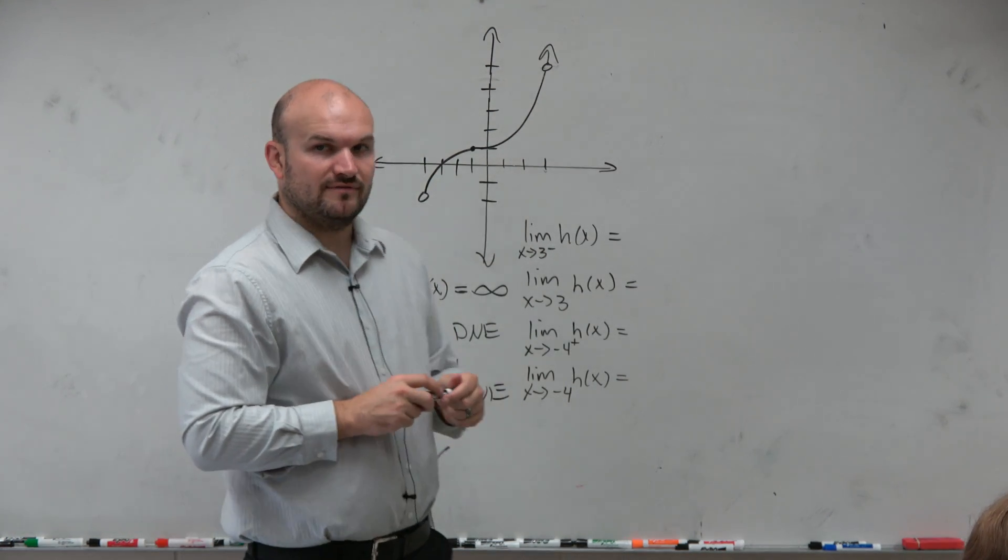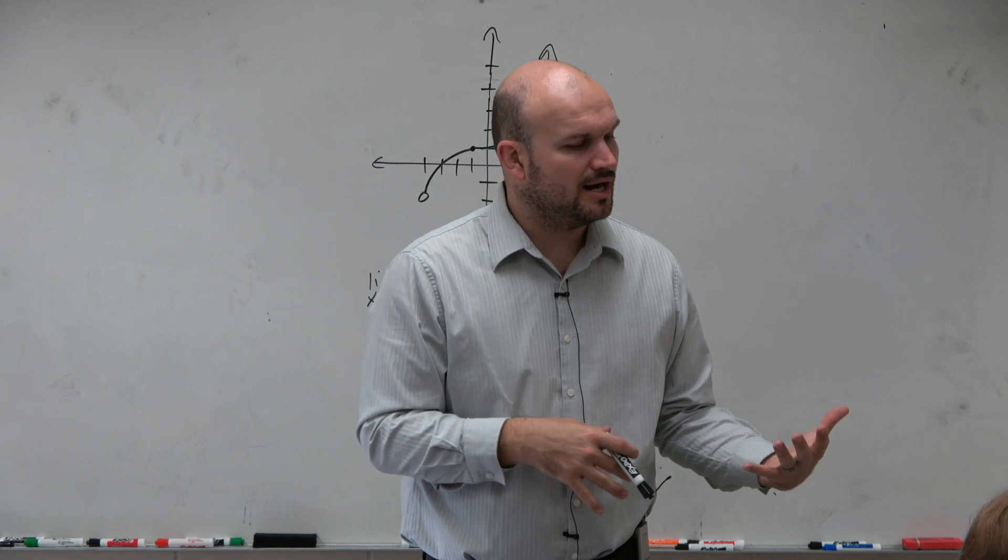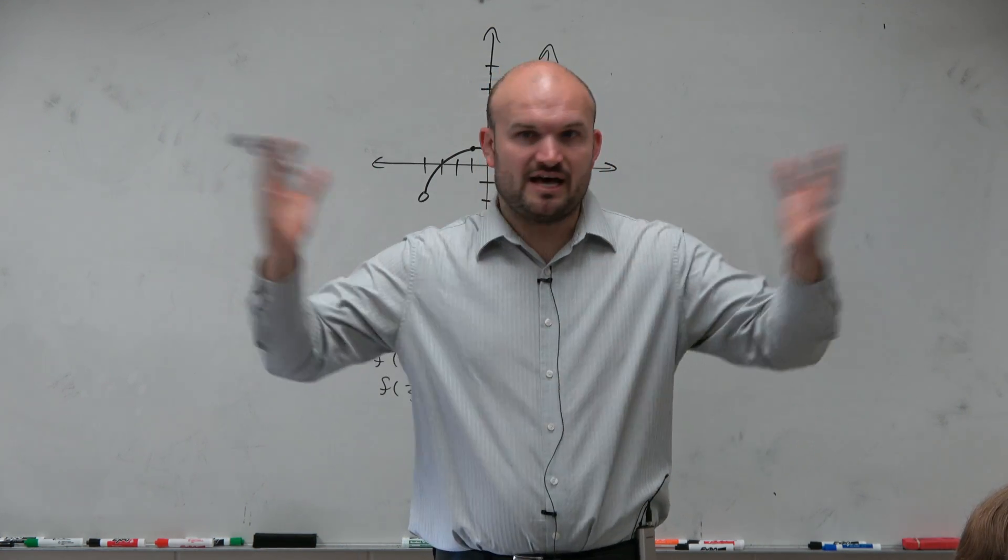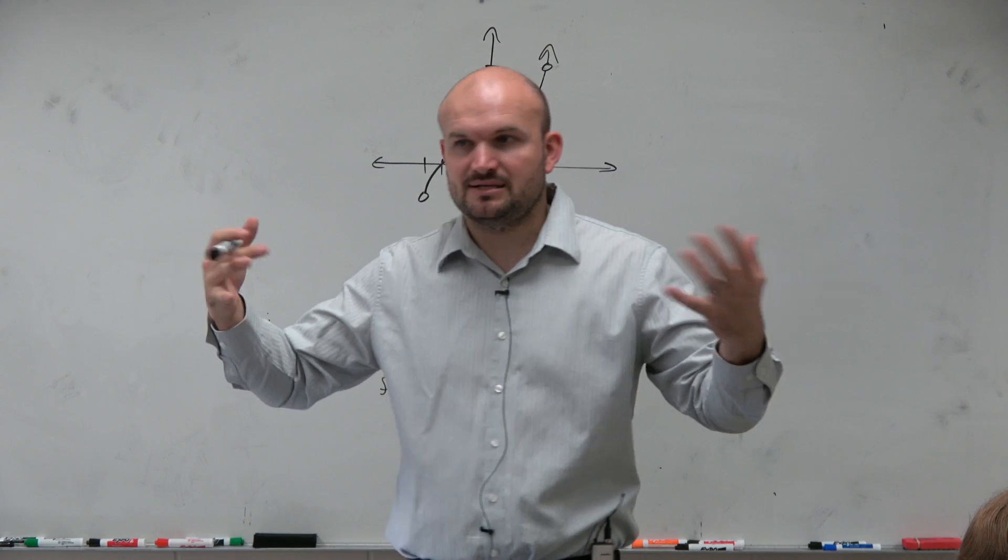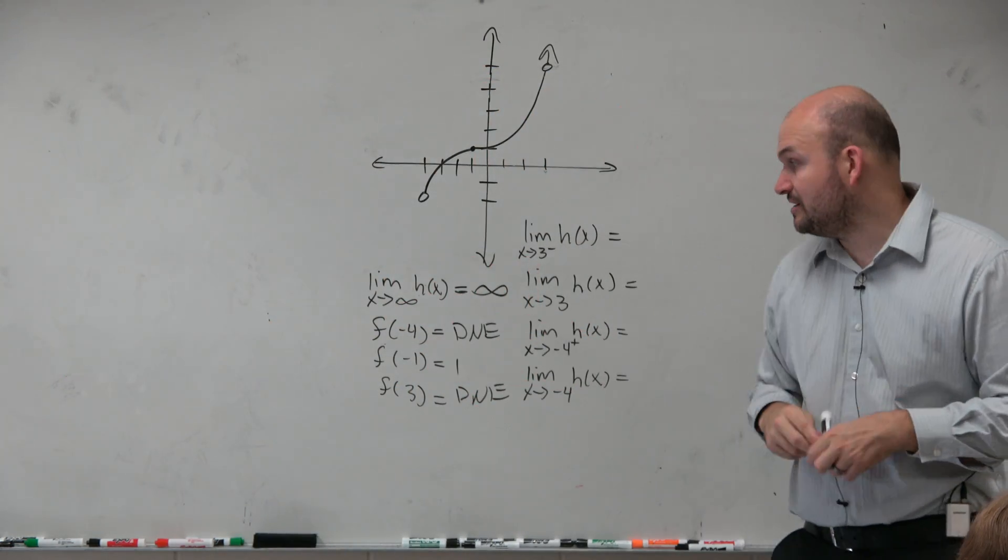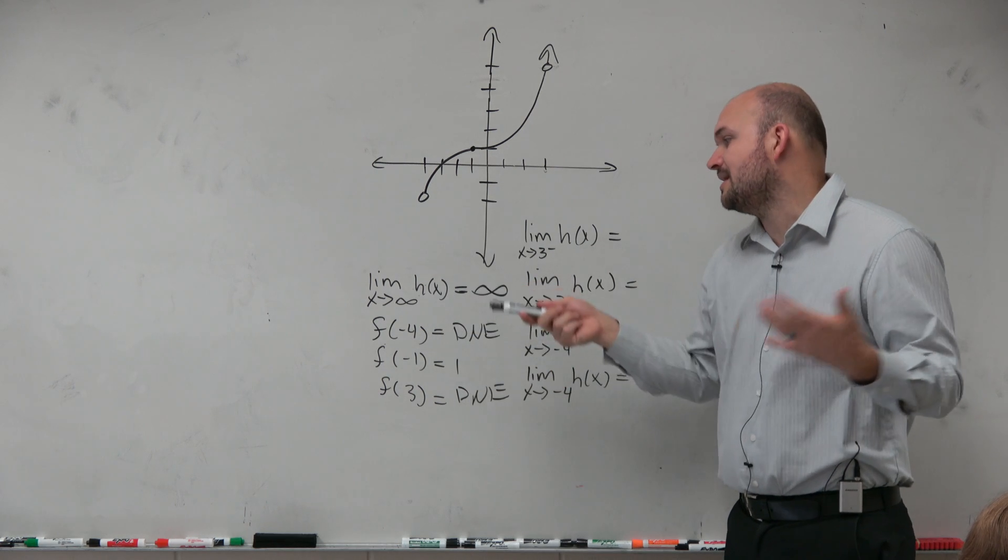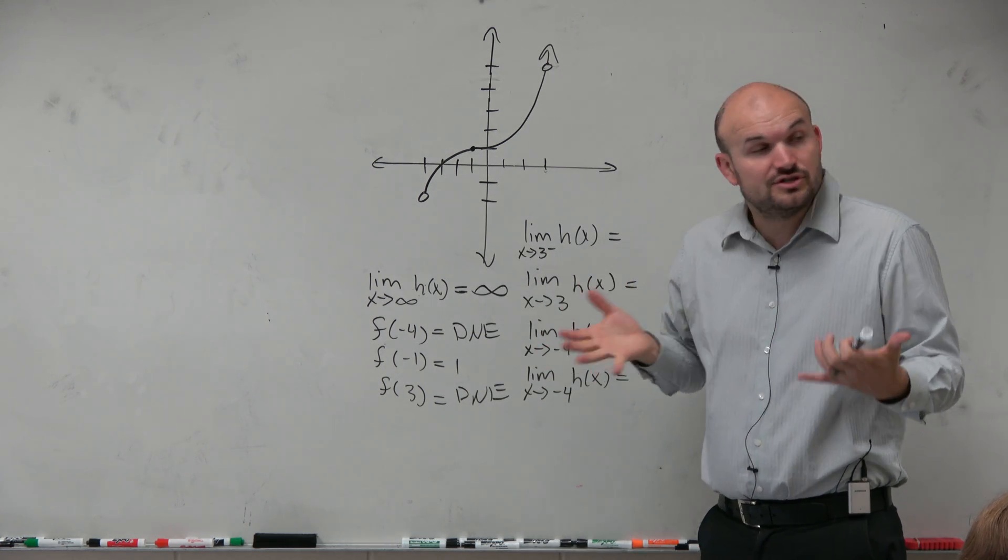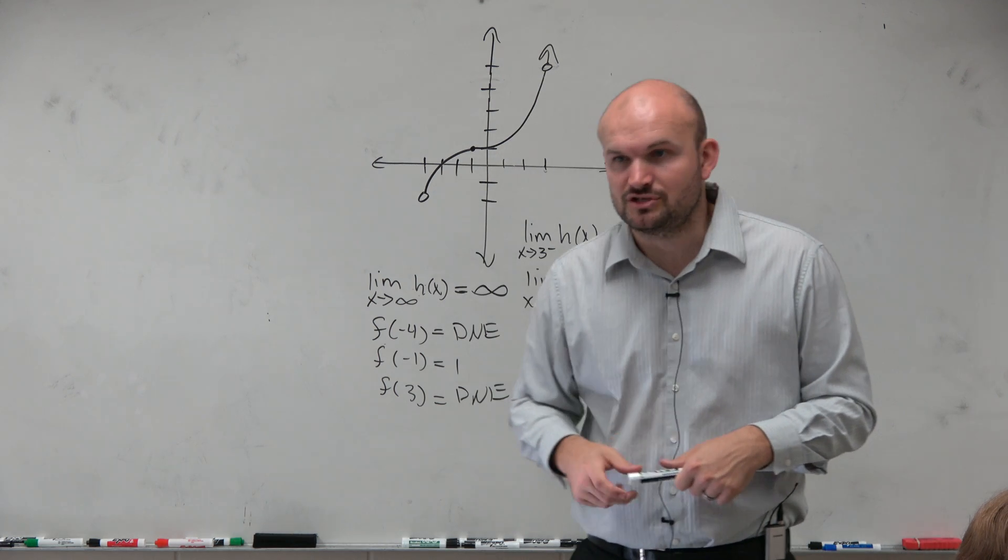So this is really important. From last function, it was all continuous. There was values for every point, right? So no matter what point you pick, there was always a value. Now we have some points where we don't have some values. And where those holes are occurred at negative 4 and at 3, there's no value of the function, or we can't evaluate for a given value of the function.